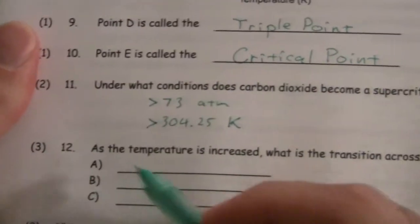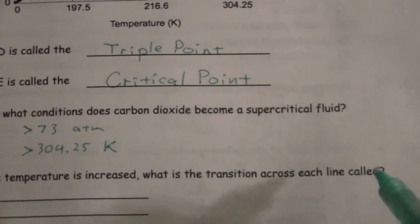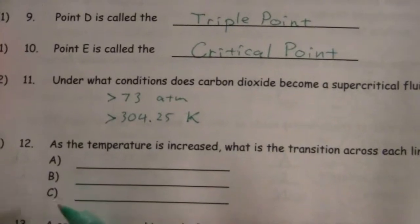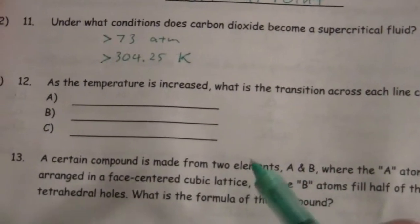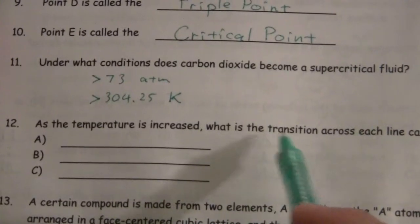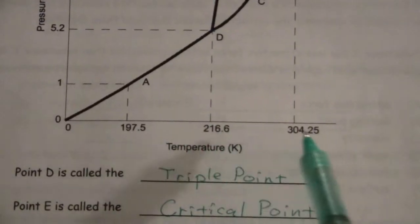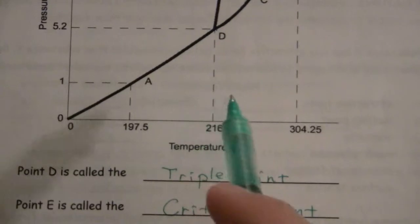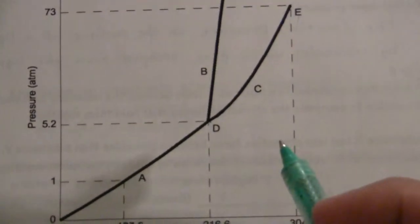Question 12, as the temperature is increased, what is the transition across each line called? A, B, C, those are the three lines that are designated on the graph. We're wanting to know, what is the transition across each line called, as we're increasing the temperature. So, if we increase the temperature, that means we're moving from left to right, and we're crossing each of these lines.